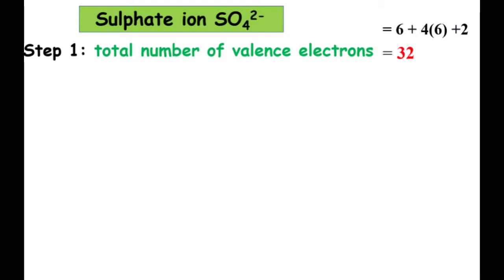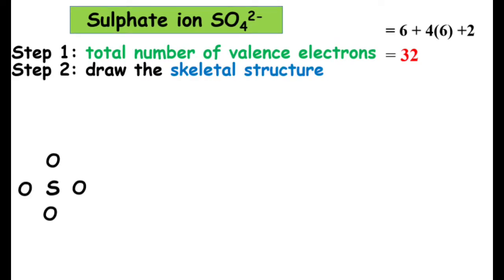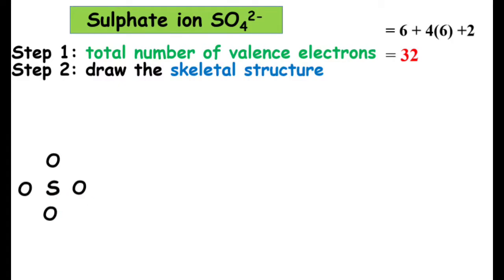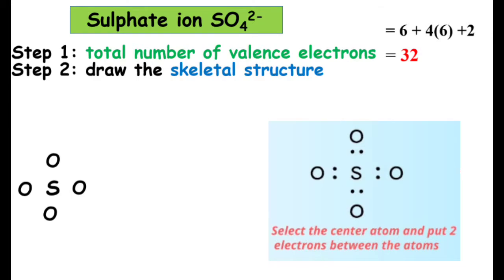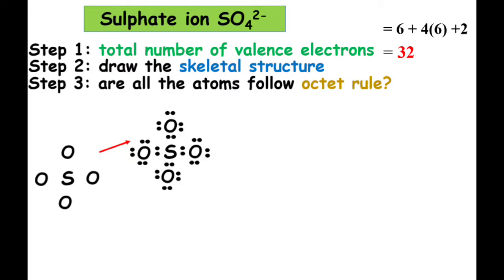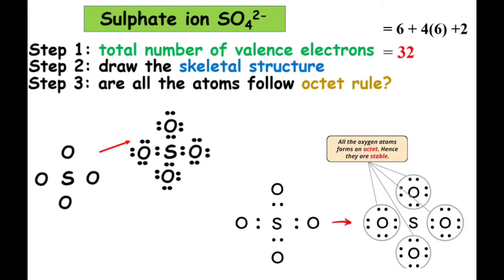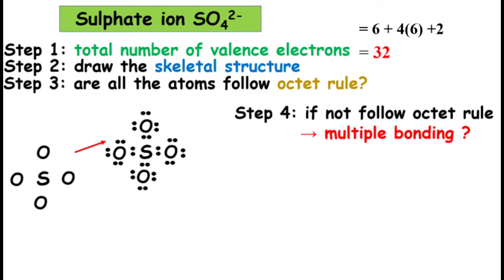Next, the Lewis structure of sulfate ion. Sulfate ion is a polyatomic ion having a negative charge of negative two; that's why we need to add two to the total number of valence electrons. For the second step, we need to draw the skeletal structure. The central atom has the least electronegativity, therefore the sulfur atom is the central atom. Now, put two electrons between each sulfur atom and oxygen atom to represent a chemical bond between them. Then you have to complete the octet on the oxygen atoms so that all the oxygen atoms form an octet. If we consider double bonds in two of the sulfur-oxygen combinations, we will get this structure.